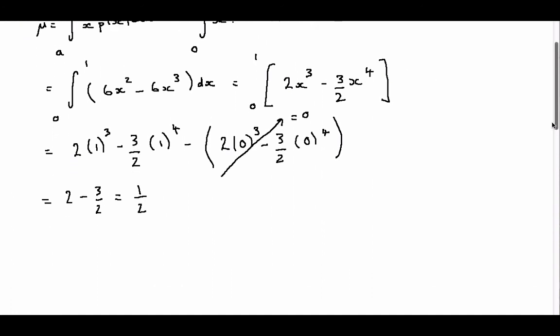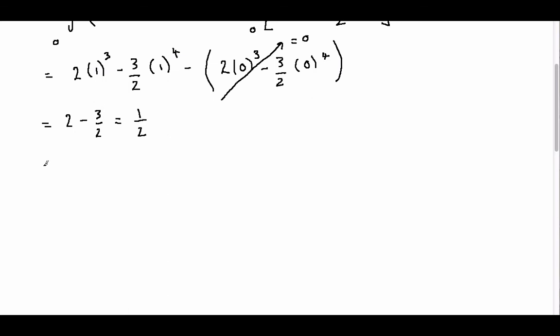So to find the standard deviation, I first of all need to find the variance and then take the square root of it to get the standard deviation. So the variance is given by the integral between A and B,